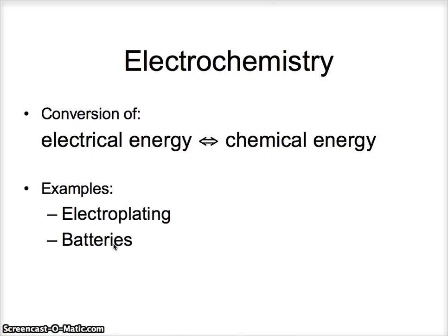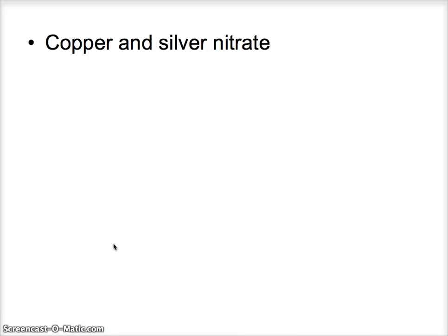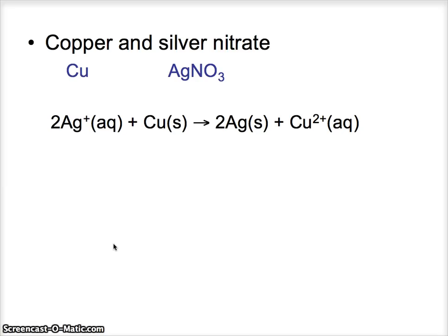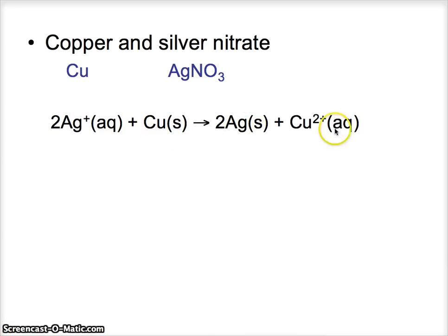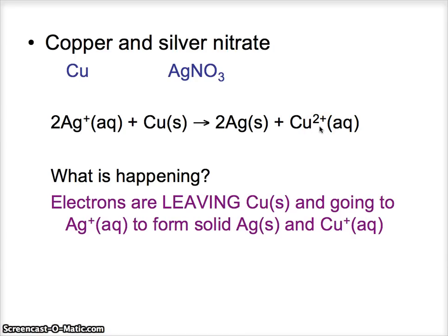What is electricity? Essentially what it is is the flow of electrons. And if you can follow the flow of electrons in chemical reactions, then you know what electrochemistry is. An example of this is copper and silver nitrate. If you take solid copper and put it into a solution of silver nitrate, you're going to end up with the copper dissolving and with silver being produced on the bottom of the beaker. So over time, our aqueous silver reacts with our copper solid. There's a transfer of electrons and the silver becomes solid and the copper becomes aqueous.